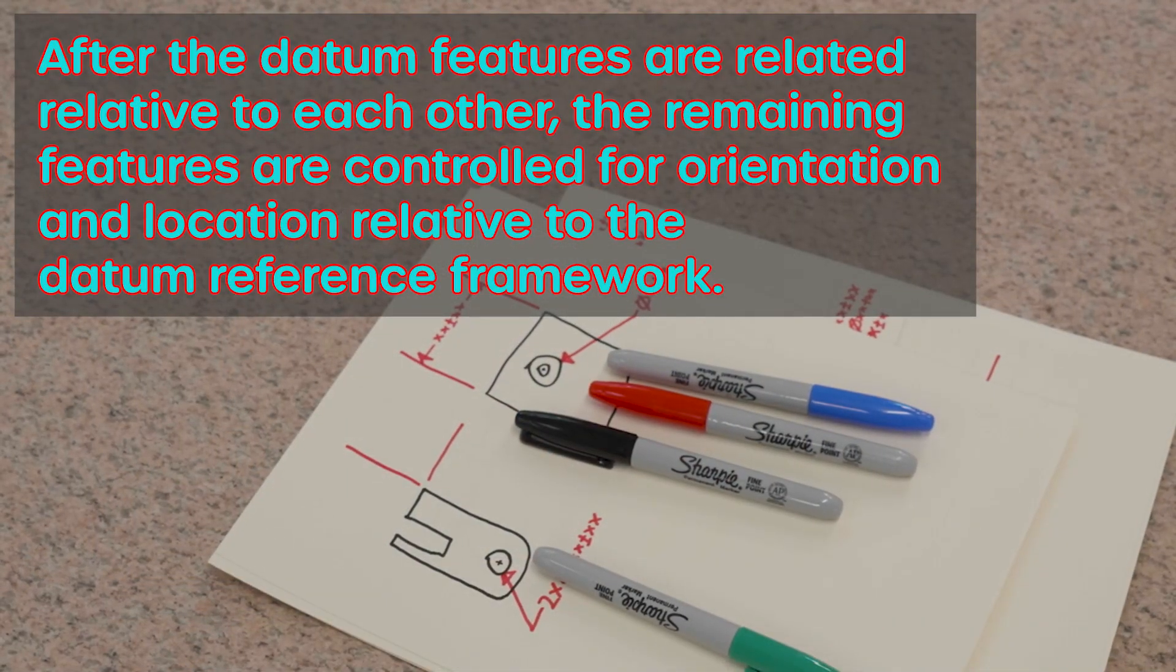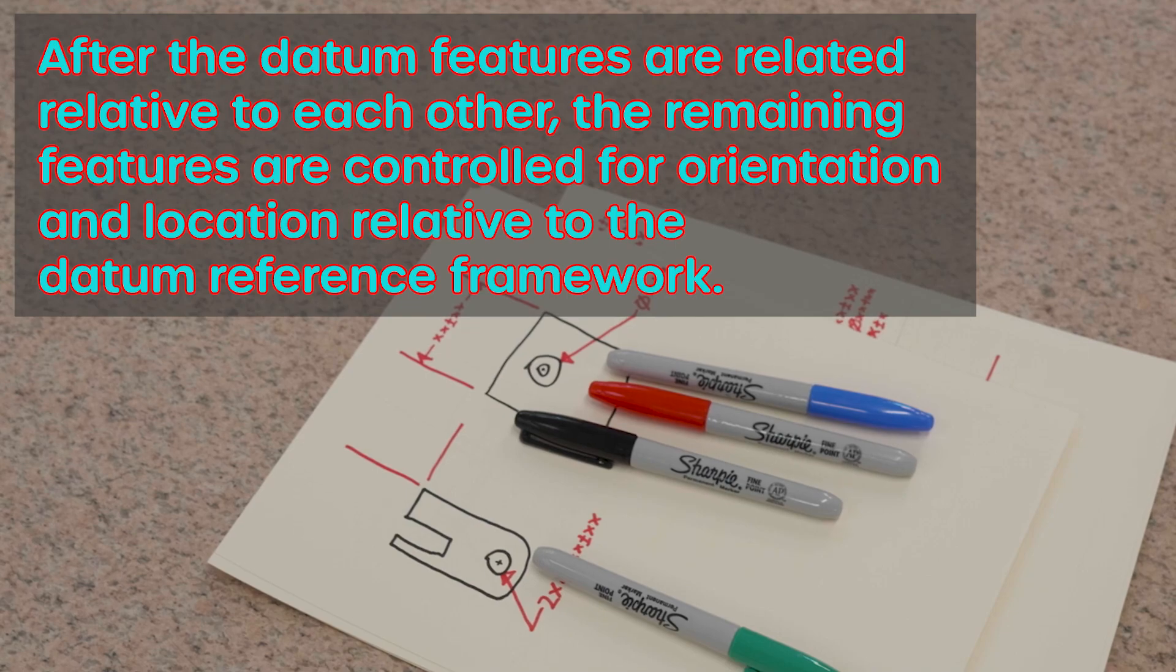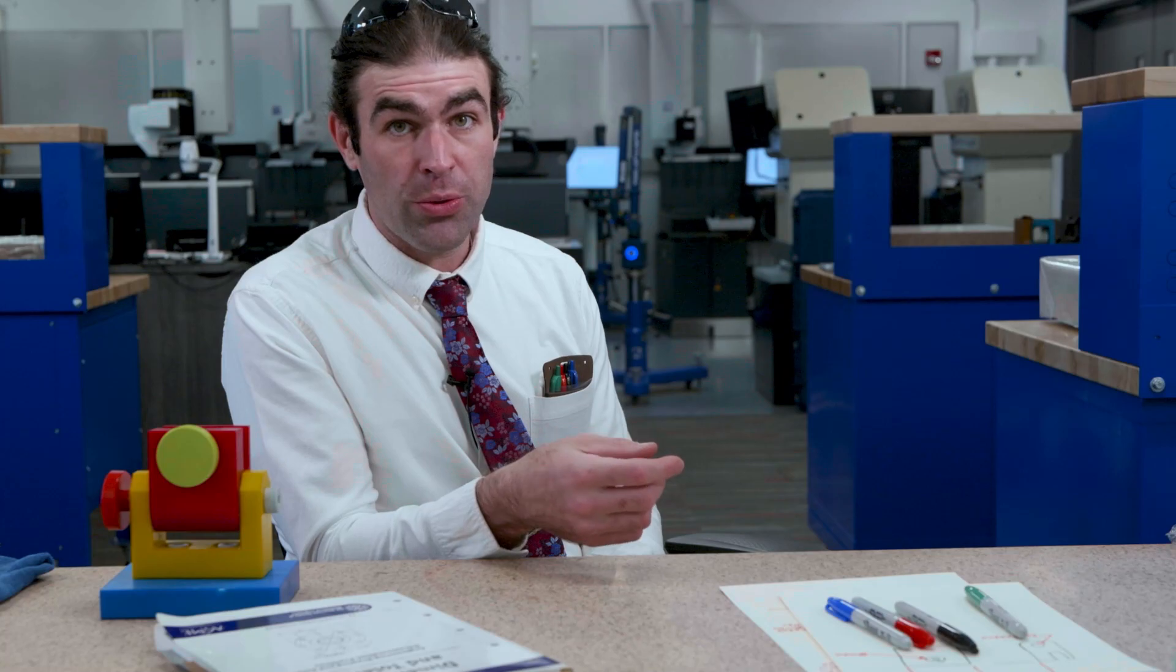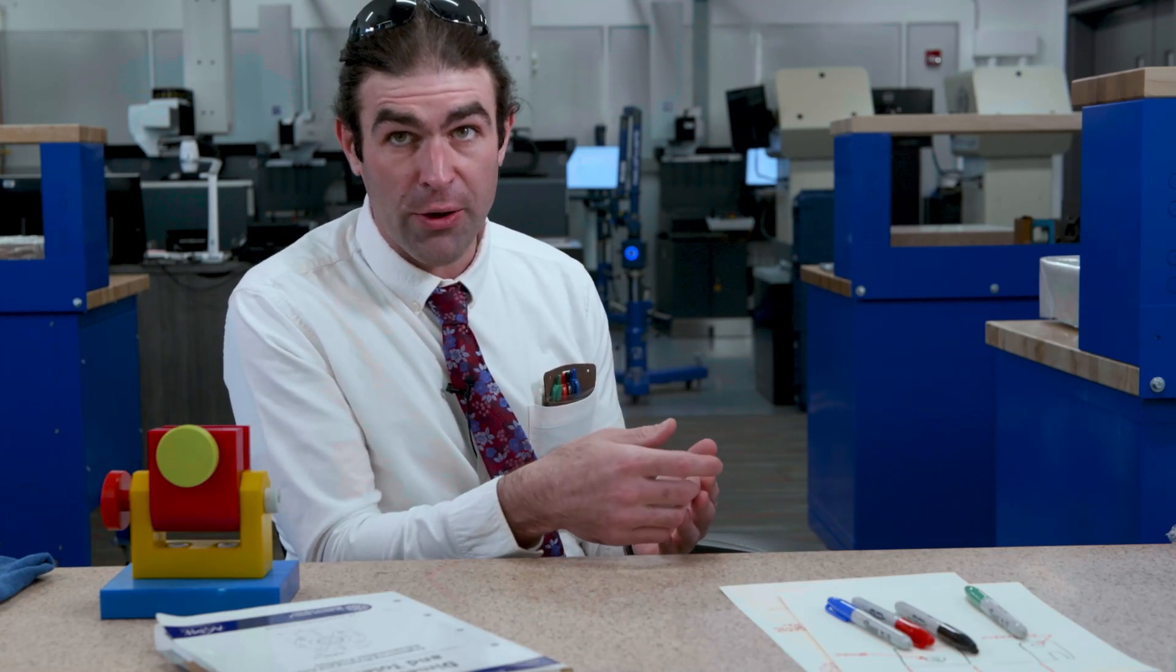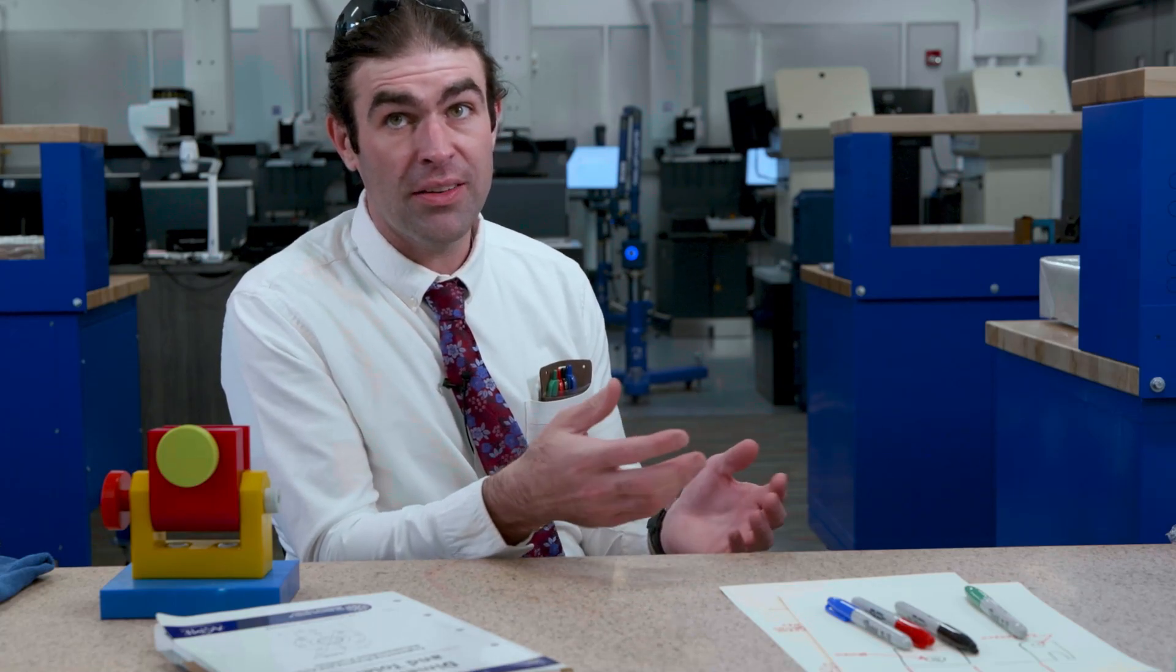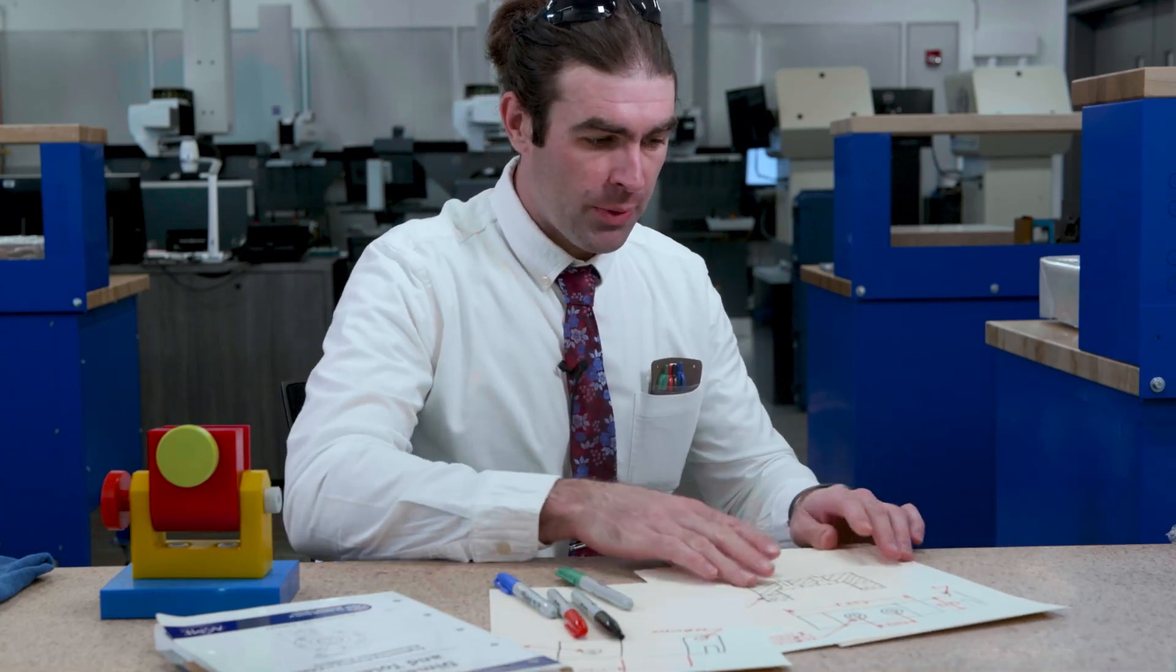The last part: after the datum features are related relative to each other, the remaining features are controlled for orientation and location relative to the datum reference framework. So this is where you go through and you take any holes or any other features and you apply a position or a profile to them, and normally this will be to your primary, secondary, and tertiary datum features. Anything that's controlling location normally needs to be locked in all six degrees of freedom to get an accurate measurement. Let me switch over to this scratch paper and we can take a look.